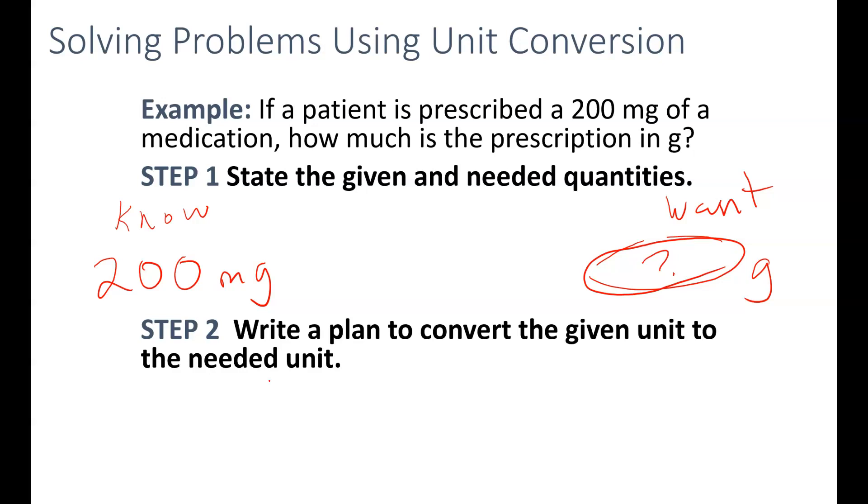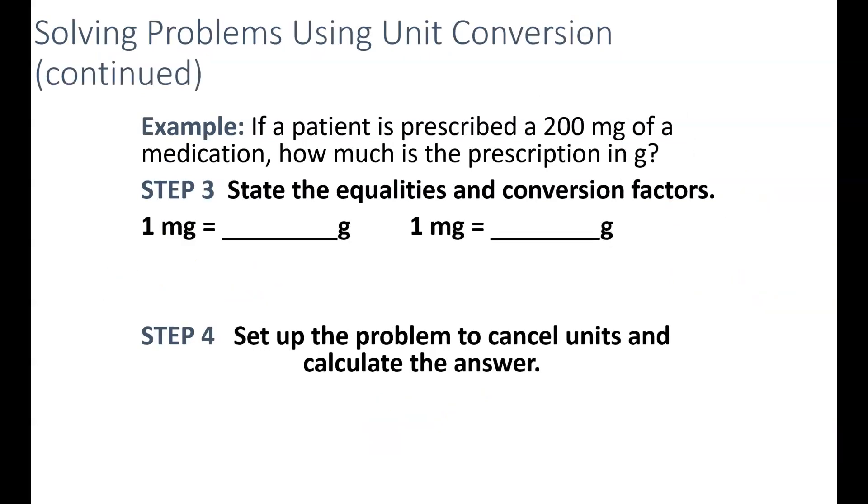We want to create a plan to convert from our milligrams to grams. So to do that we can convert directly from milligrams to grams. If we look back at our equivalencies we already know how many milligrams equals how many grams. So for our third step we want to have an equivalence between milligrams and grams. One milligram is equal to one times ten to the negative third grams.